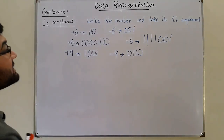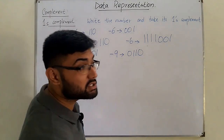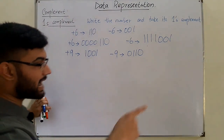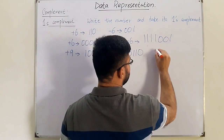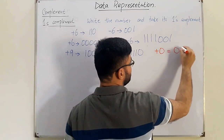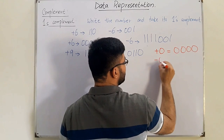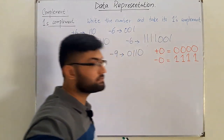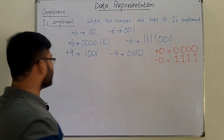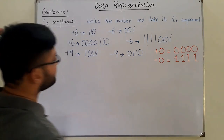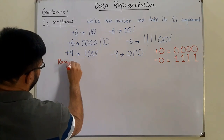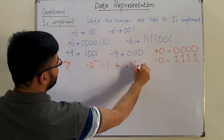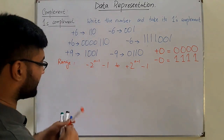In one's complement, zero has two representations: a positive zero (0000 in four bits) and a negative zero (1111, which is the one's complement of 0000). The range of one's complement is the same as sign magnitude: from negative 2^(n-1) − 1 to positive 2^(n-1) − 1.